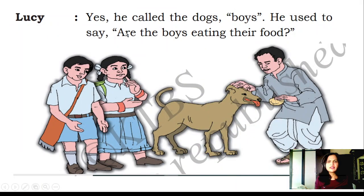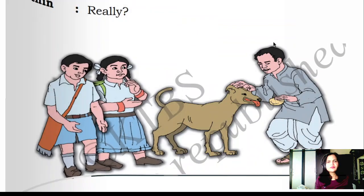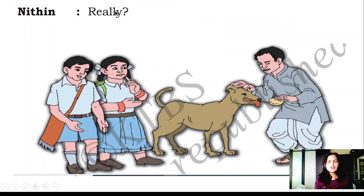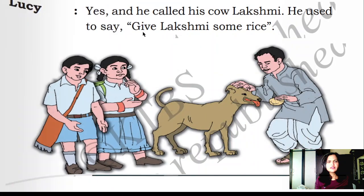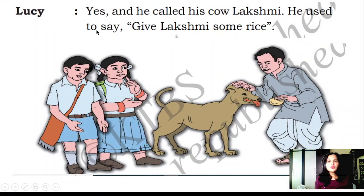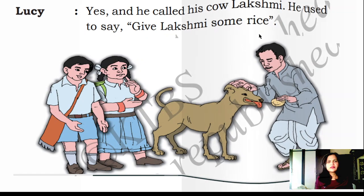Lucy: Yes! He called the dogs 'boys.' He used to say, 'Are the boys eating their food?' Nitin: Really? Lucy: Yes, and he called his cow Lakshmi. He used to say, 'Give Lakshmi some rice.'